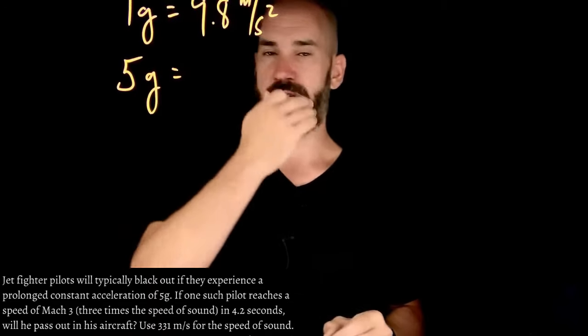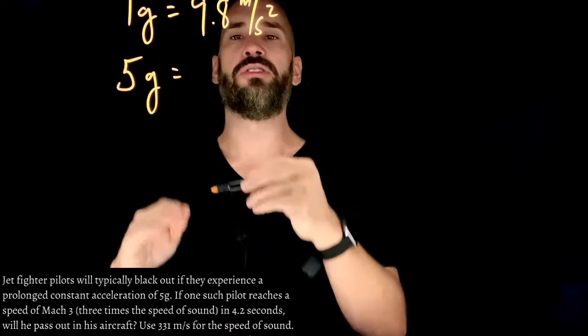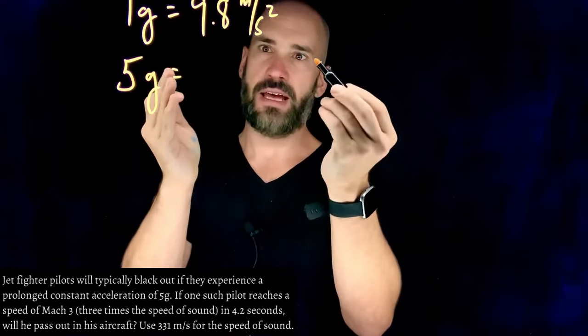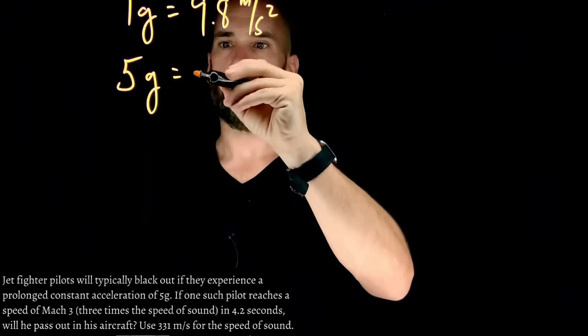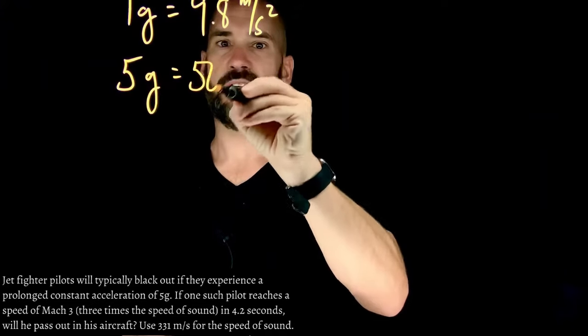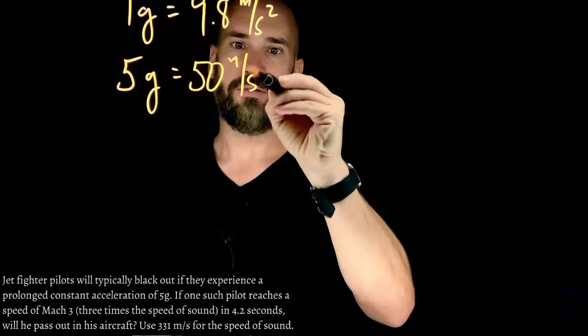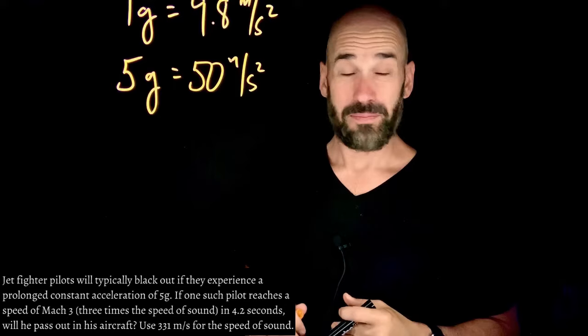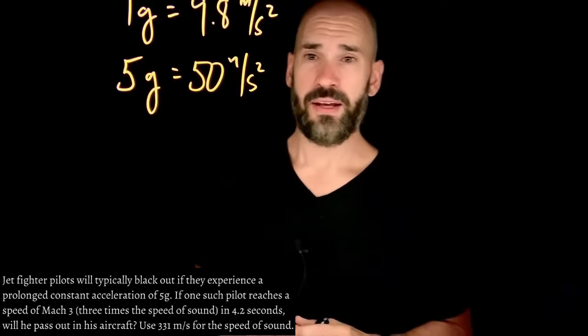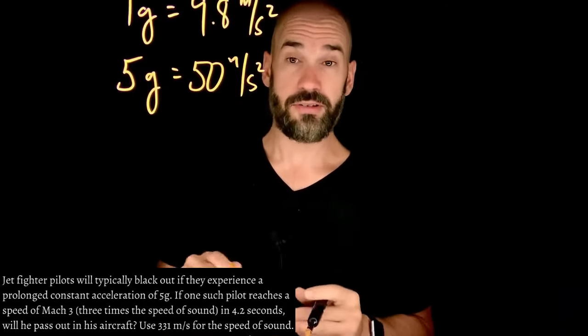Which is 5 times 9.8 meters per second squared. So we'll just say roughly 5 times 10. So we will say roughly 50 meters per second squared. At about 50 meters per second squared, you're passing out. There's not really much to do about it.